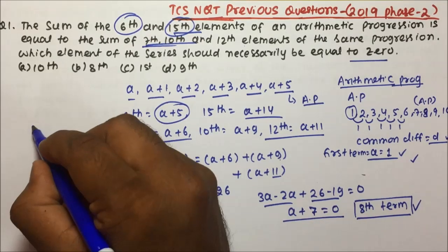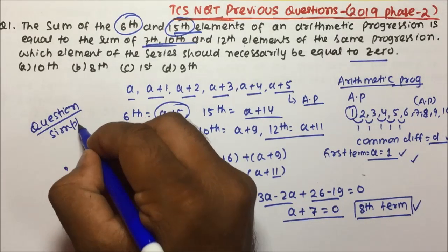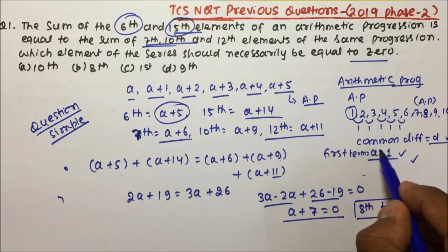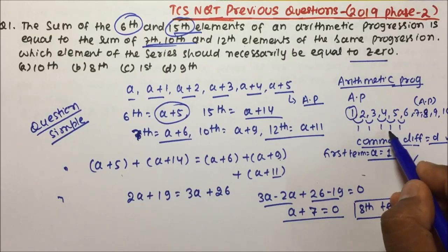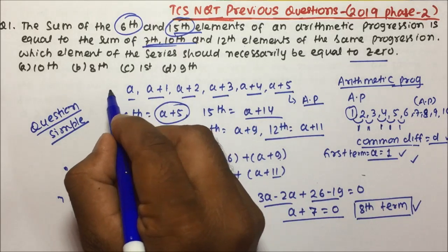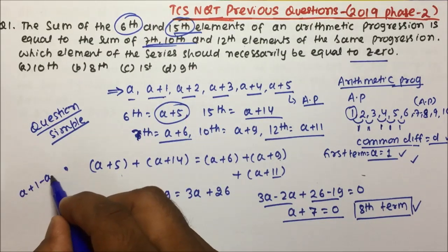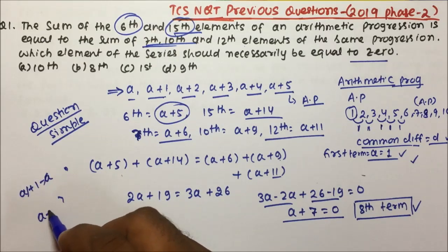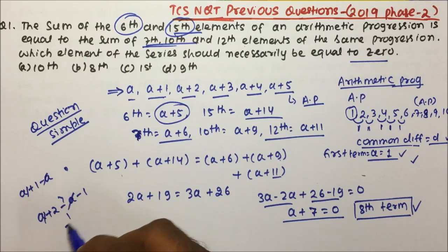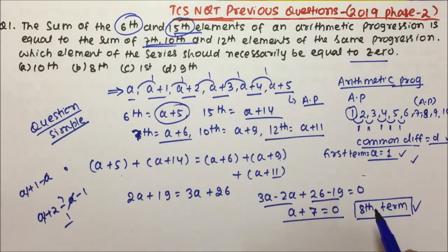Friends, the question was simple. The key idea is: arithmetic progression means the common difference is the same. You can verify: a+1−a = 1, a+2−(a+1) = 1, so the common difference between the numbers is 1, confirming it's an arithmetic progression.